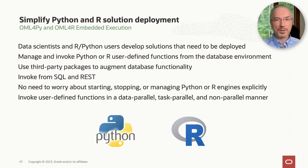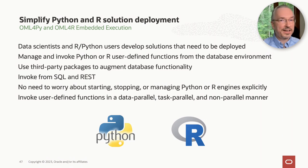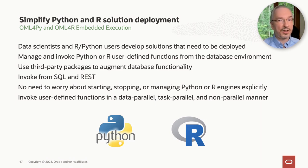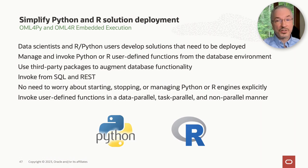We're switching gears to talk about deploying R and Python-based solutions through the database environment. Deploying solutions using R and Python can introduce several challenges for application developers, including separately managing R and Python engines, as well as scalability and performance concerns. OML for R and OML4Py support native R and Python interfaces to the in-database algorithms, but they also support embedded execution to deploy R and Python code using database-spawned and controlled engines. This code can also use third-party packages from R and Python ecosystems. Embedded execution enables invoking user-defined R and Python functions from SQL and, on Autonomous Database, from a REST API as well.